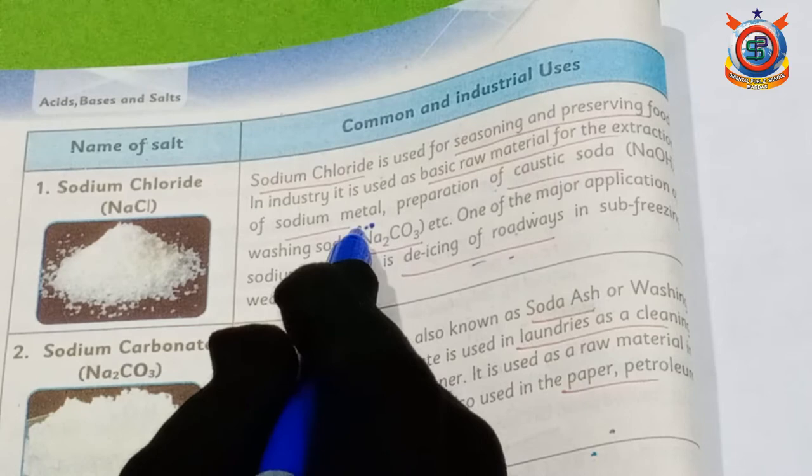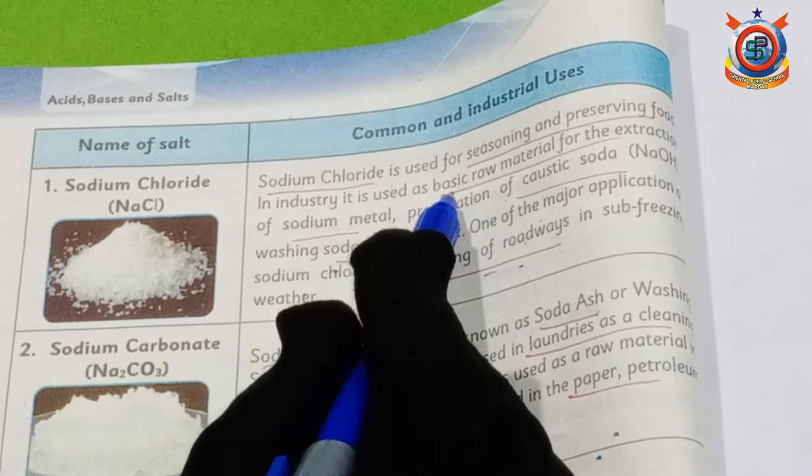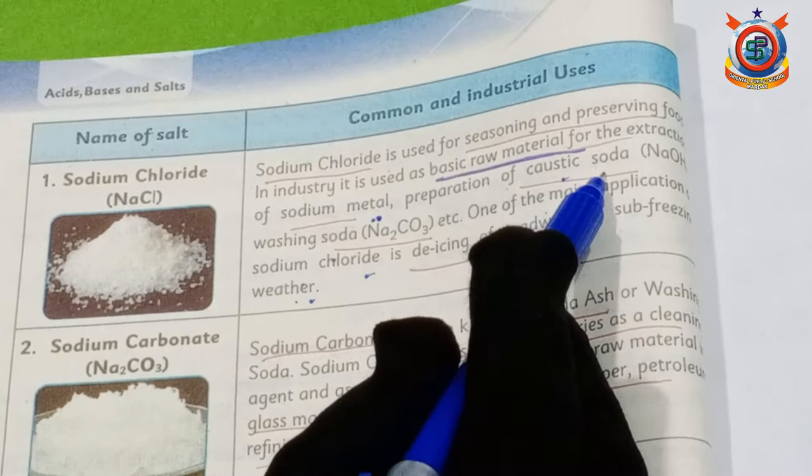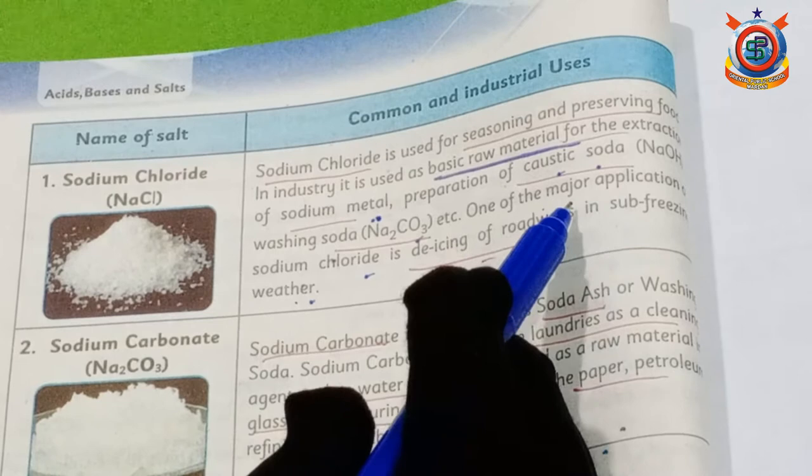Raw material is the necessary material which is used for the extraction of sodium metal. Sodium chloride is also used in the preparation of caustic soda and washing soda. And one of the major applications of sodium chloride is that it is used as a de-icer for roadways.